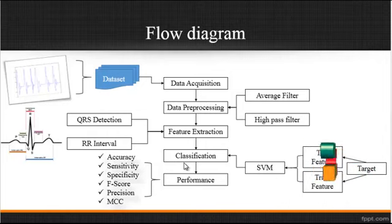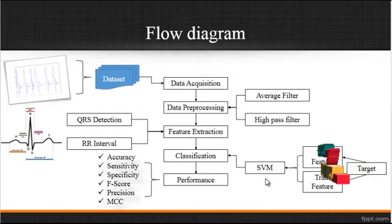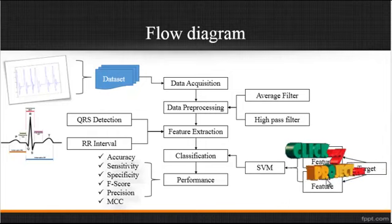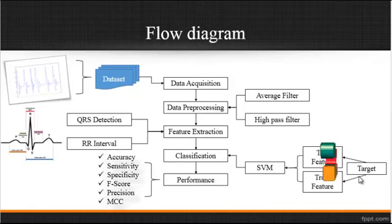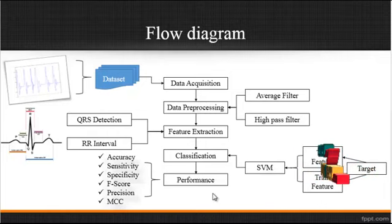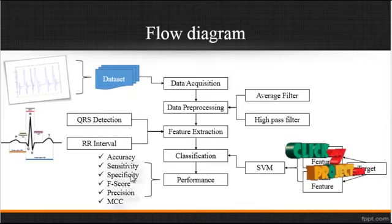After feature extraction, classification is done using the SVM classifier. The SVM classifier takes three inputs: first, the test feature; second, the train feature; and third, the target. The test feature represents the feature of the input signal, and the train feature represents the features of all dataset signals. The target indicates whether the input is normal or abnormal, represented as F1 and F2. After SVM classification, performance is estimated using parameters such as accuracy, sensitivity, specificity, F-score, precision, and MCC.